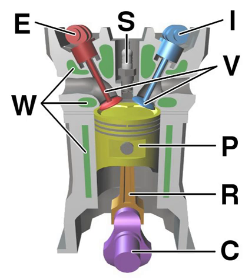The compression ratio affects the performance in most types of reciprocating engine. It is the ratio between the volume of the cylinder when the piston is at the bottom of its stroke and the volume when the piston is at the top of its stroke.